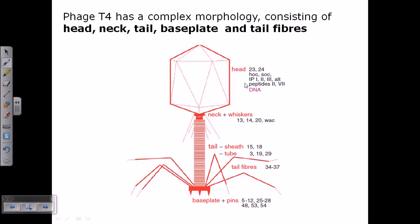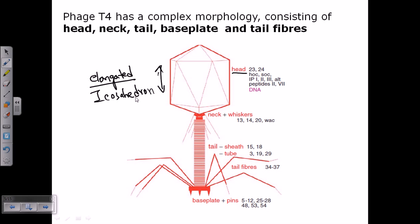The T4 virus has four structural parts. The head is a slightly elongated icosahedron — it is stretched in both top and bottom directions. There is a contractile tail region, which is why it is placed in the Myoviridae group. The head is linked to the tail via the neck region, and at the bottom there is a base plate with pins coming out.